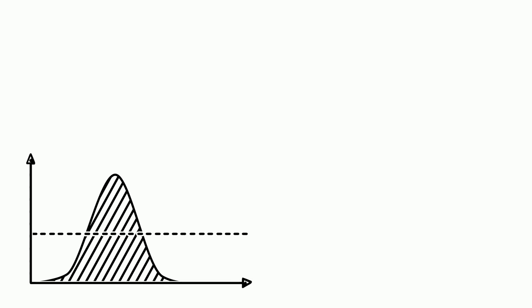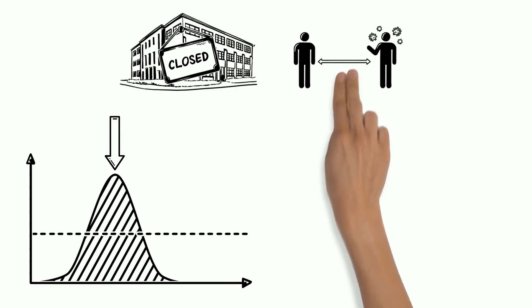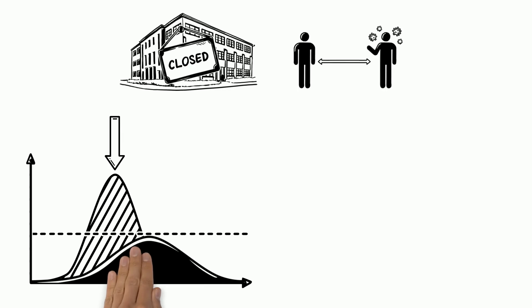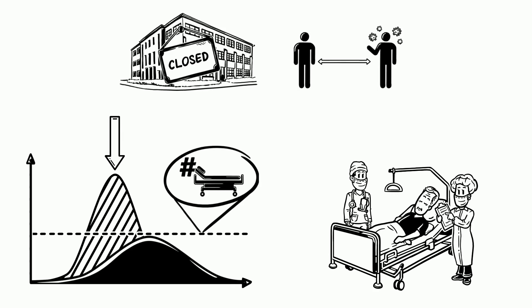As seen in the graph, cases increase sharply when the crisis is left unmitigated. But with precautionary measures like school closures and social distancing in place, the curve can be drastically flattened so that the need for ICU beds doesn't exceed the current capacity. This lessens the stress on hospitals and makes survival all the more likely for those infected.